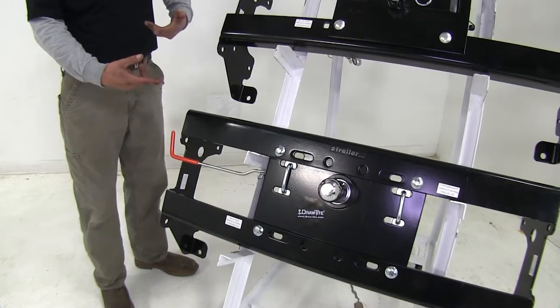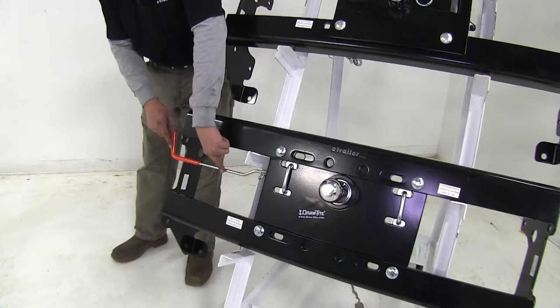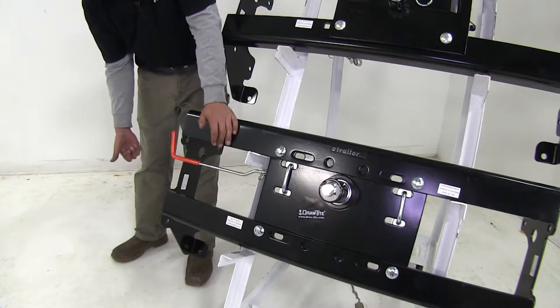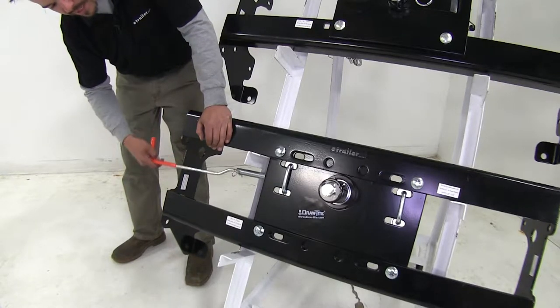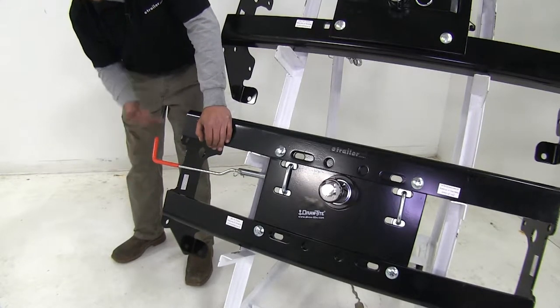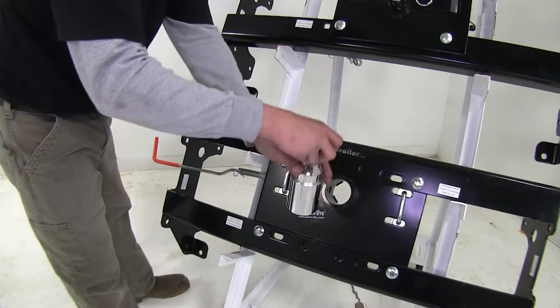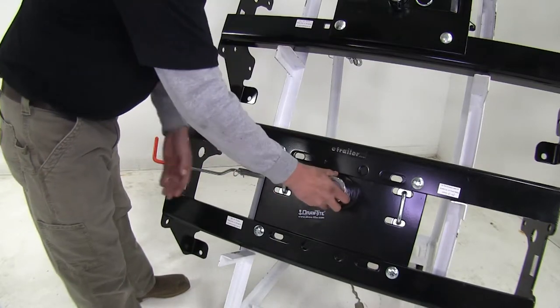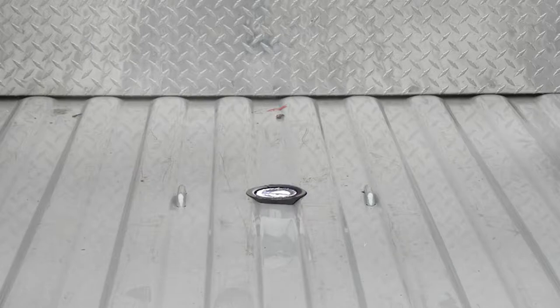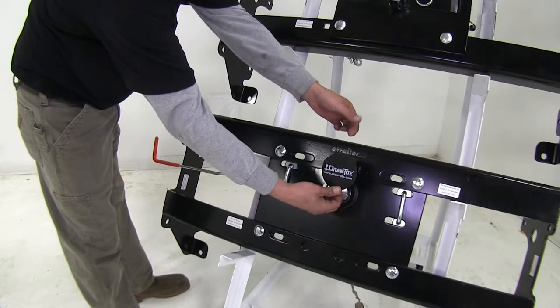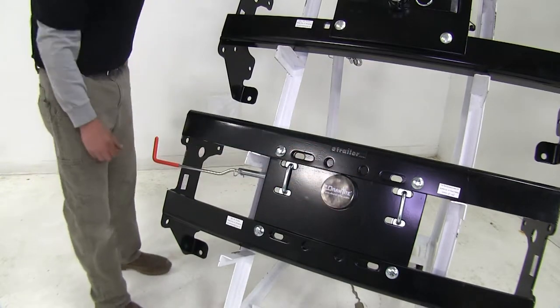Now the Drawtite Hide-a-Goose here is going to work in a very similar fashion. If we come to our handle over here, again it's going to be on our driver side wheel well. If we pull the handle out we can move it either direction, whether it be forward or backwards. Then we unlock our ball and we can turn it over and put it in there so we can store it, and the Drawtite actually comes with a nice magnetic cover so when our ball is stored we can have a nice plug to keep all the debris out.